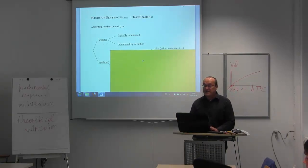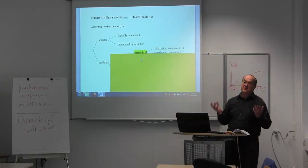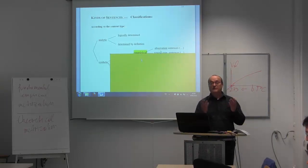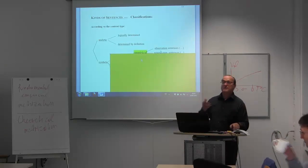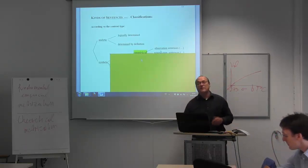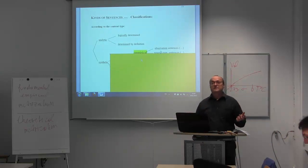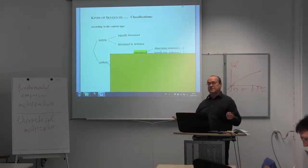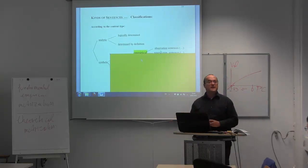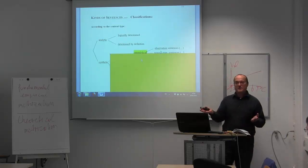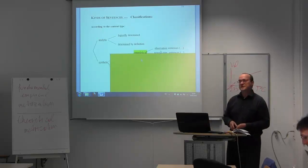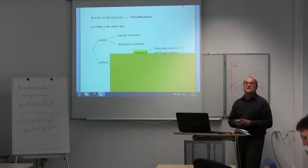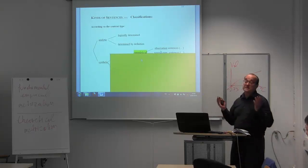For a synthetic sentence, even if you know the meaning of the sentence you don't know whether it's true. If you tell me 'tomorrow it will rain', I fully understand the meaning but don't know whether it's true. Or 'all swans are white', or 'in Europe there are black swans' — I don't know. I know there are some black swans in Australia, but I fully understand the meaning without knowing the truth. That is the criterion: this sentence is clearly synthetic.